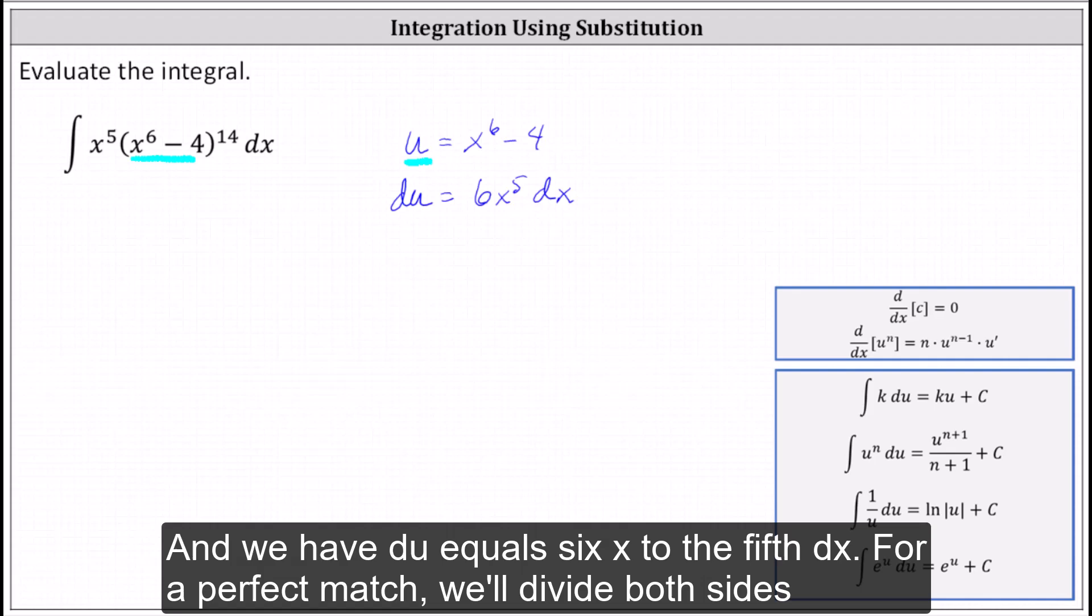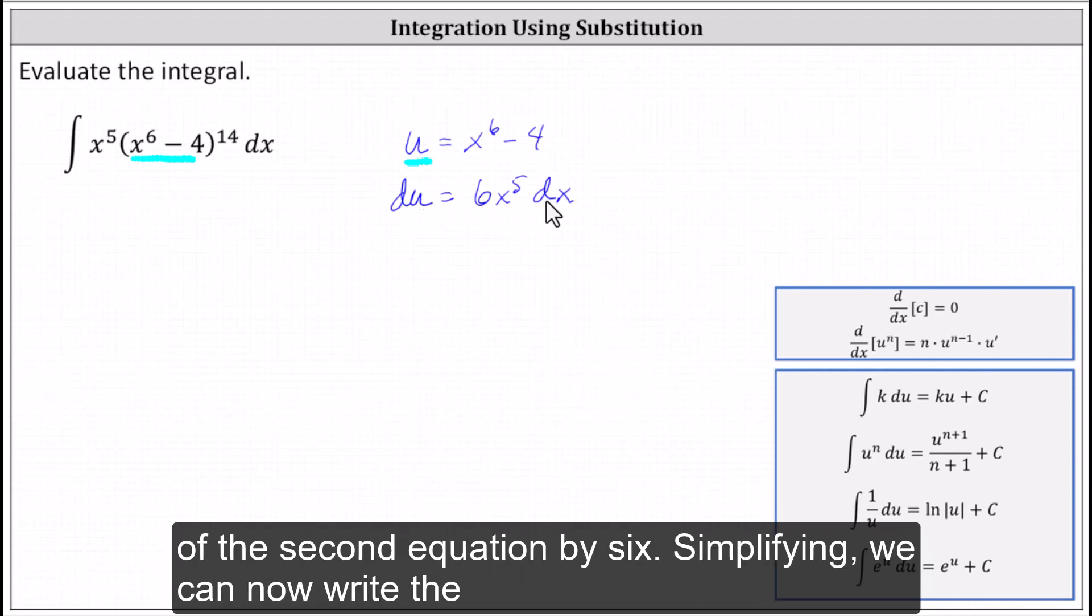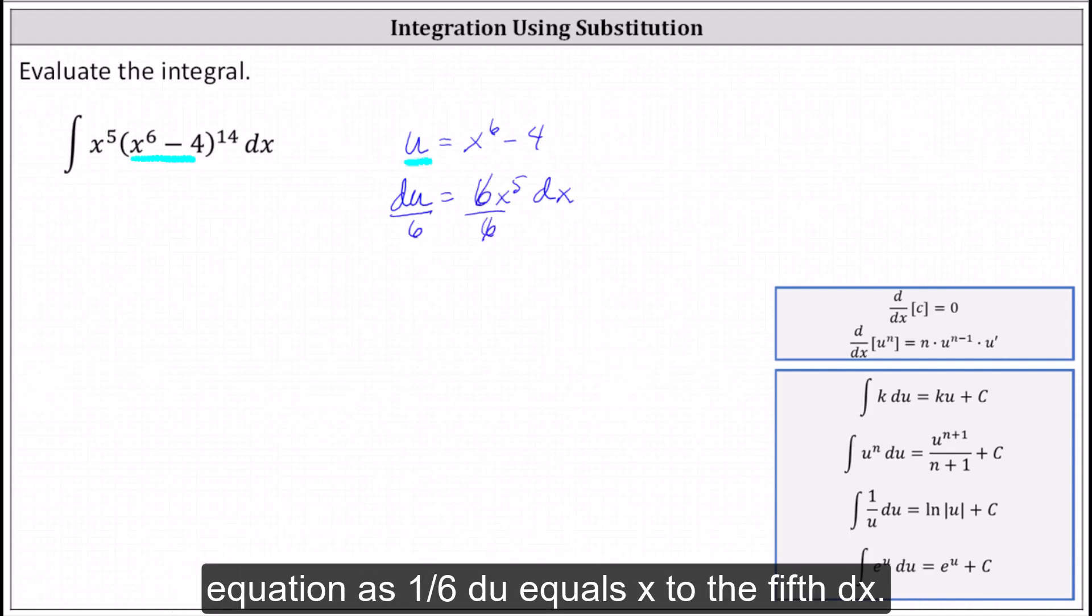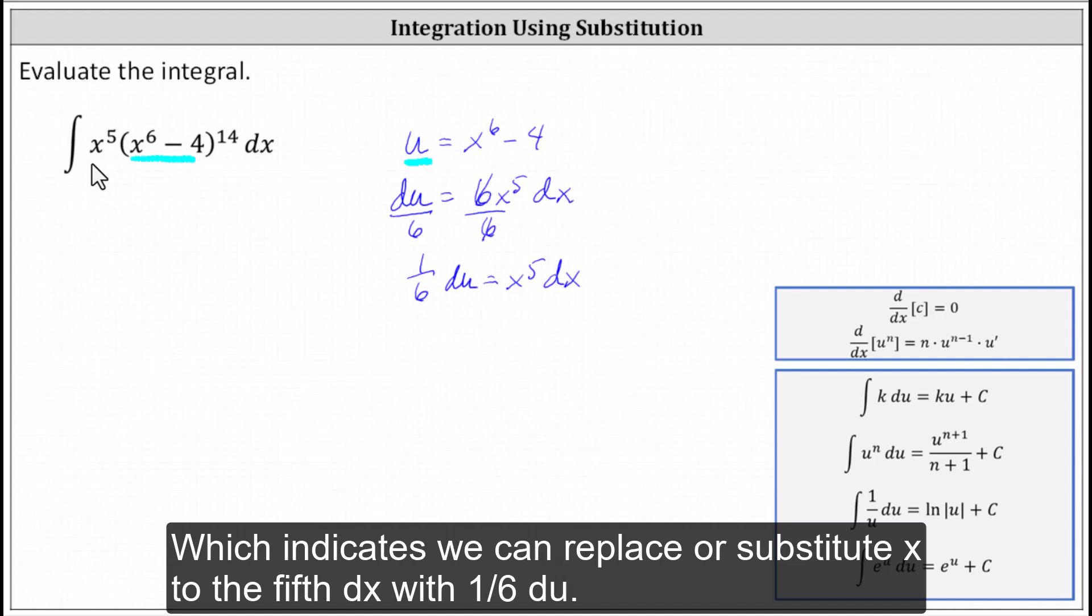For a perfect match, we'll divide both sides of the second equation by six. Simplifying, we can now write the equation as one-sixth du equals x to the fifth dx.